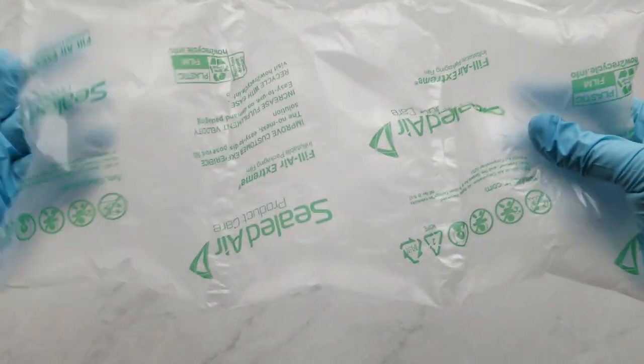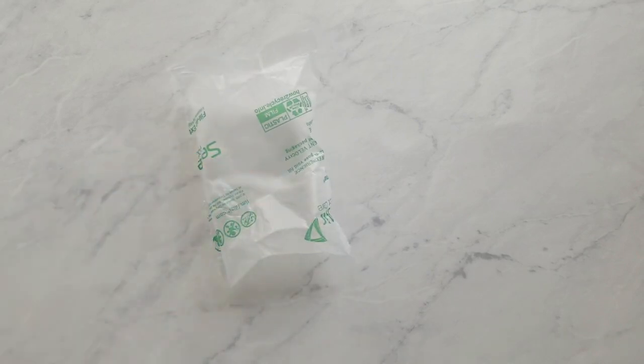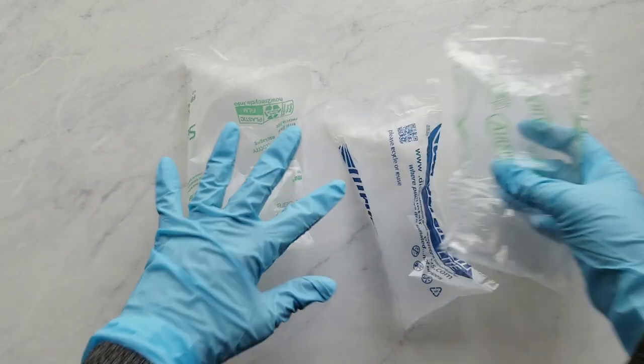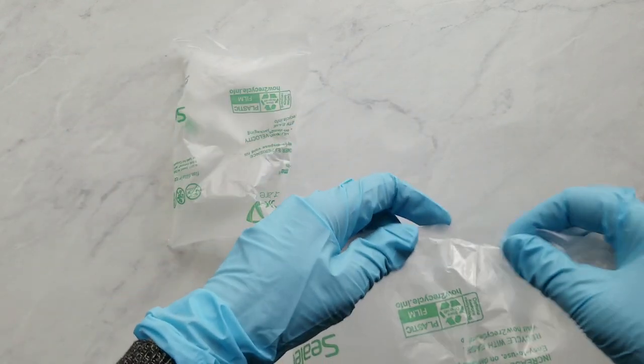The liners are just sealed air packaging that you get in your shipments. You usually probably throw those away, but this is a way of recycling and using them again. You could also use baby bottle liners or any other kind of bag, but ideally you want something that's long and skinny.